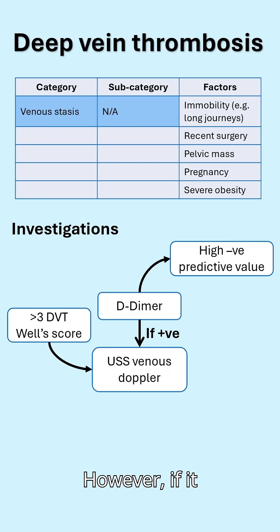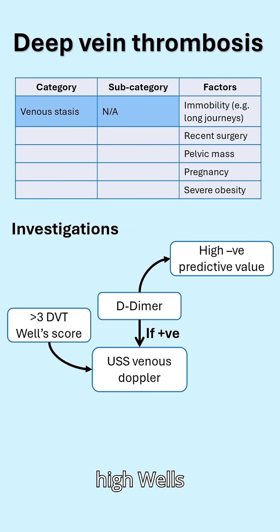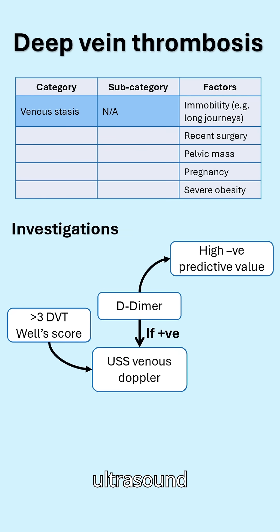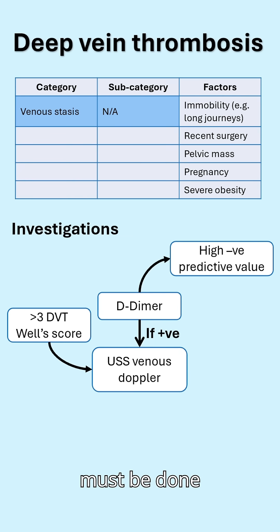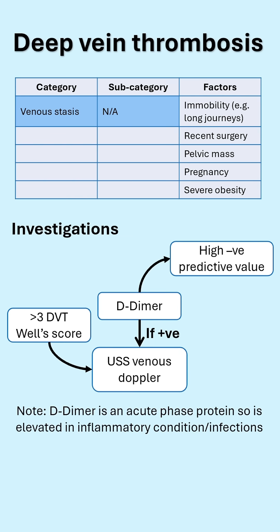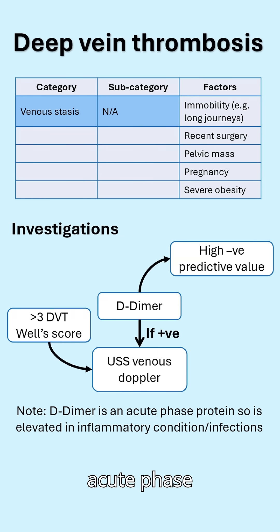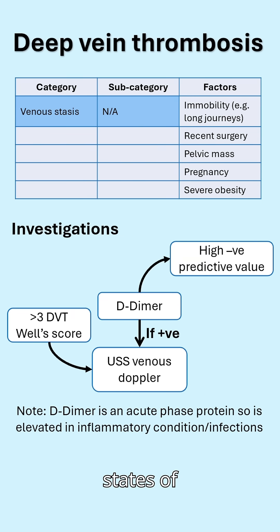However, if it's positive, along with a high Wells score for DVT, then an ultrasound venous doppler must be done for confirmatory diagnosis. Note that the D-dimer is an acute phase protein, so it is raised in states of inflammation or infection.